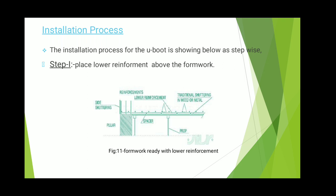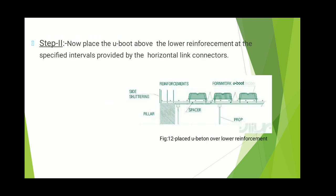The installation process for U-Boot is shown stepwise. In the first step, we place the lower reinforcement above the formwork. In the diagram you can see reinforcement bars placed below the slab. In the second step, we place the U-Boots above the lower reinforcement at specific intervals, connected by horizontal link interconnection using the spacer joint to make them rigid at a certain interval.